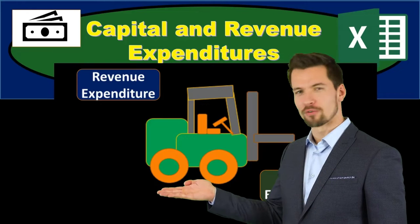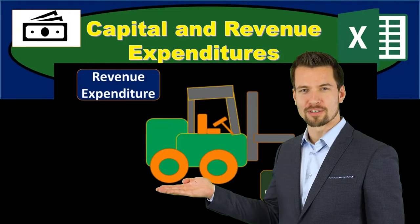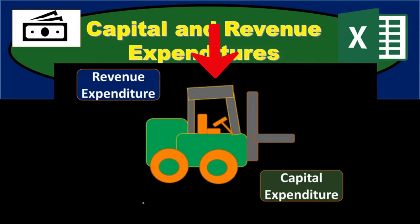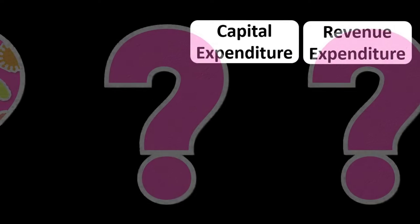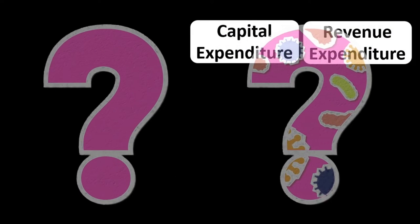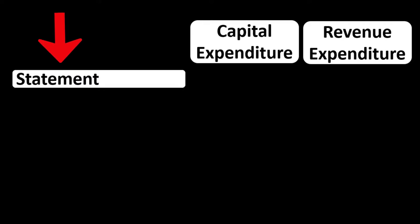In this presentation we will discuss capital expenditures and revenue expenditures and the difference between the two, using a forklift as an example when we go through the demonstrations. The question is: should something be capitalized as a capital expenditure, or should it be expensed as a revenue expenditure? In other words, what statement should the expenditure go under?